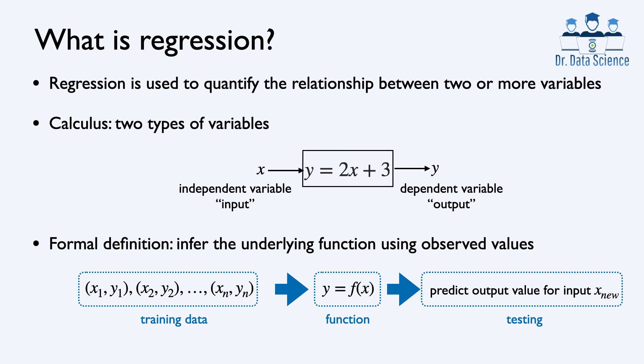And when we find this function, we can use it to predict output values or dependent variables for new inputs or independent variables, which we show here by x_n+1. This testing part is very critical for machine learning and data science methods.